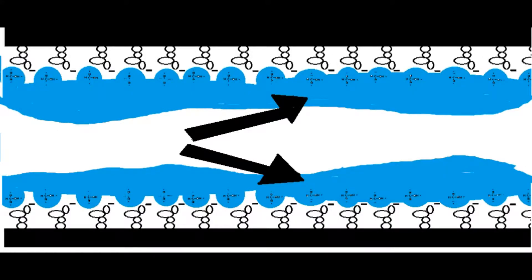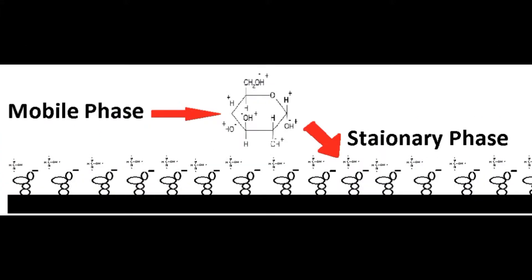By running the mobile phase through the machine first and giving it time to adjust these chains, the mobile phase has an option to interact with them, and then allows the sample to later supplant these in the mobile phase, or to more accurately compete with the mobile phase.